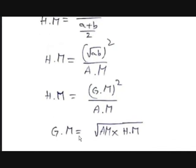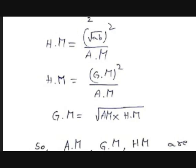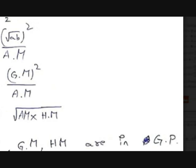So what will be the GM? Taking the square root of both sides gives GM = √(AM × HM). In other words, if AM and HM are the arithmetic and harmonic means of two terms a and b, then the geometric mean of AM and HM equals GM. This means AM, GM, and HM are in GP — that is the relation between them.